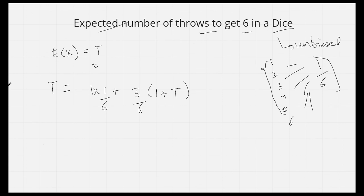So it's T. Now let's solve this. Implies 6T equals to 1 plus 5 plus 5T. If we take this side and subtract, T equals to 6. So here is our answer. The expected number of throws to get 6 in a dice is 6.